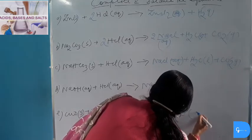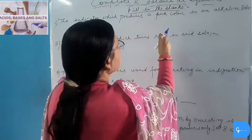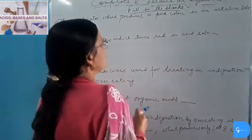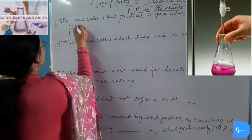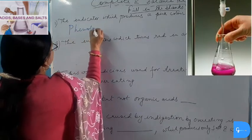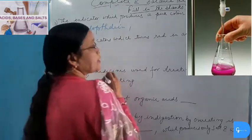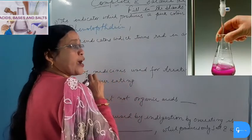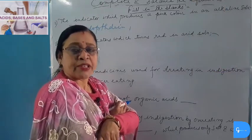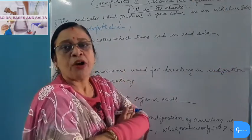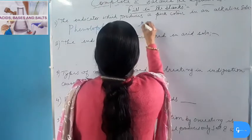The indicator which produces a pink color in an alkaline solution — we know that Phenolphthalein produces pink color in alkaline solution. Additionally, the petals of the hydrangea flower also become pink when dipped in basic or alkaline solution, but their neutral color is blue.